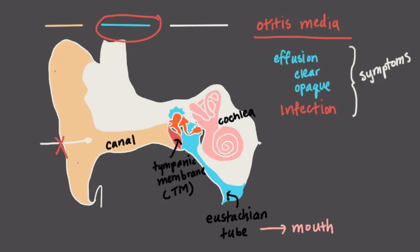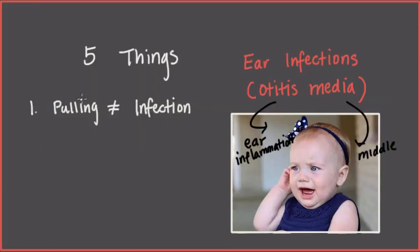This can lead to pulling on the ear, or an older kid might be able to tell you that their ear hurts. It's way more common to have fluid than a true infection. In other words, it's way more common to have inflammation of some sort than an actual bacterial infection, which is why pulling on ears does not necessarily mean that we have a real ear infection. So that was our number one here.